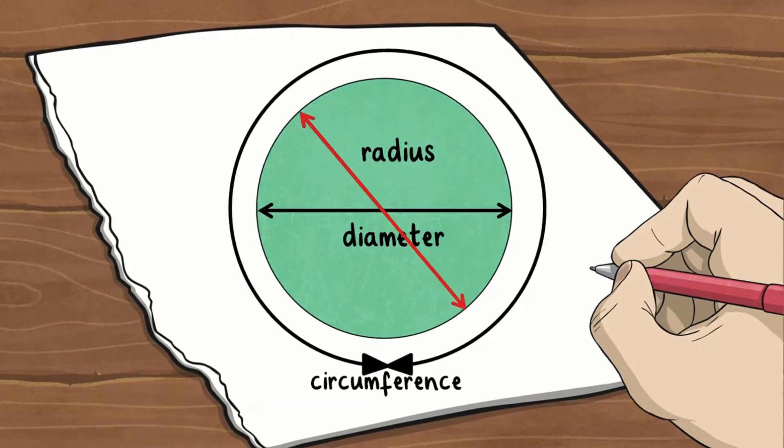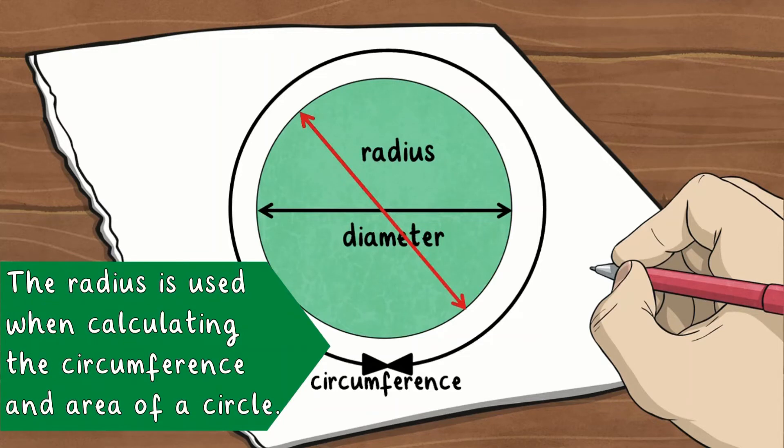Pupils will be expected to know that if you double the radius, you get the length of the diameter. The radius is used when calculating the circumference of a circle and the area of a circle too.